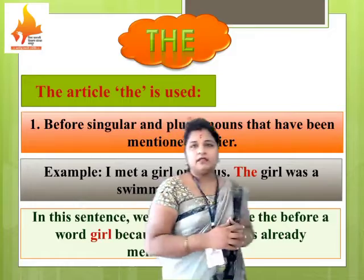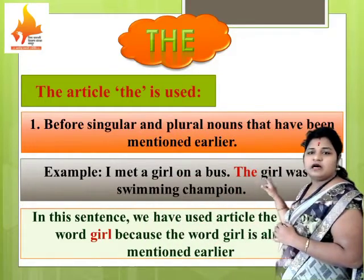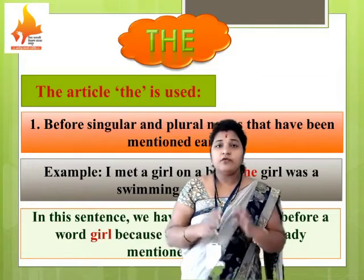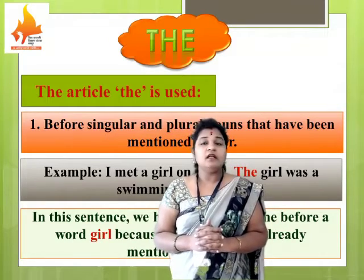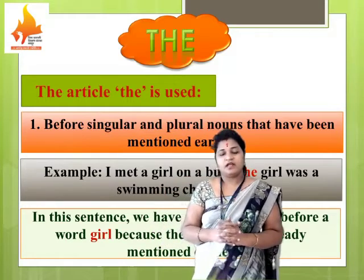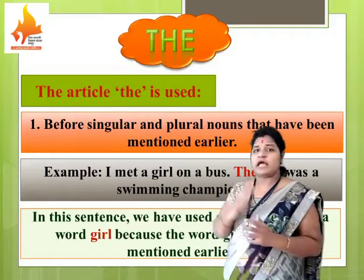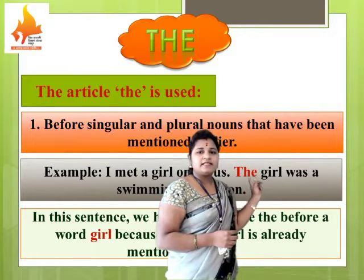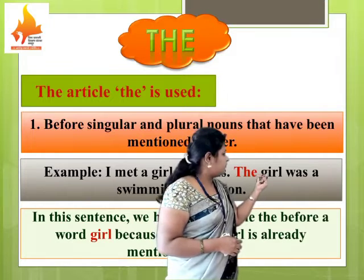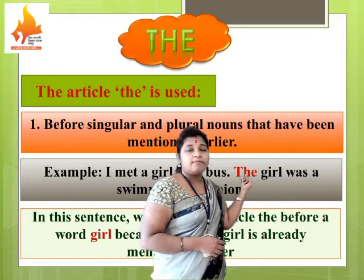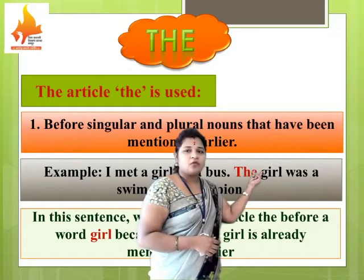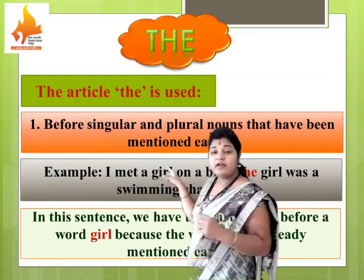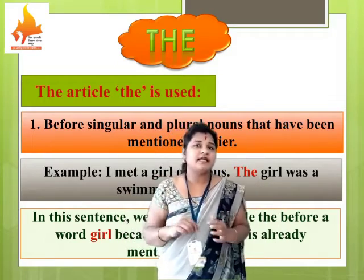Look at this example: 'I met a girl on a bus. The girl was a swimming champion.' The word which is repeated here is 'girl' — it has come two times, so it is already mentioned earlier. Before this noun 'girl', we have used article 'the' because this noun 'girl' has been mentioned earlier in the sentence.